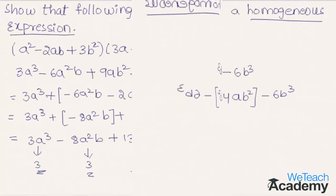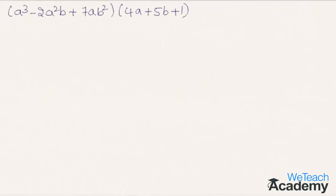Now let us proceed and solve another example. Here we have the expression (a cubed minus 2a squared b plus 7ab squared) into (4a plus 5b plus 1).